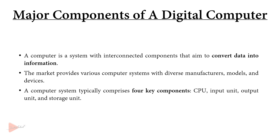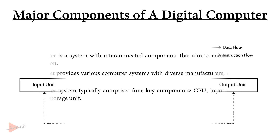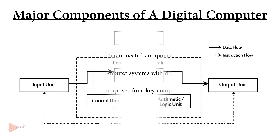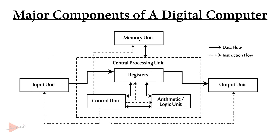In general, a computer system is composed of four major components: the central processing unit or CPU, the input unit, the output unit, and the storage or memory unit. The block diagram of our digital computer is shown here.